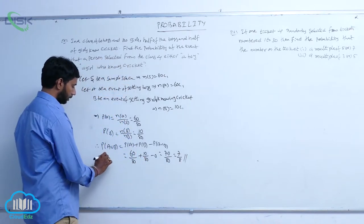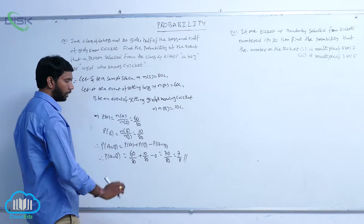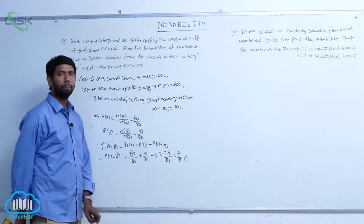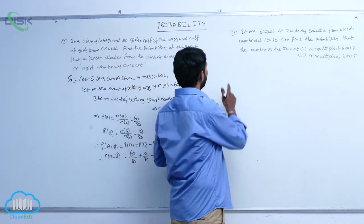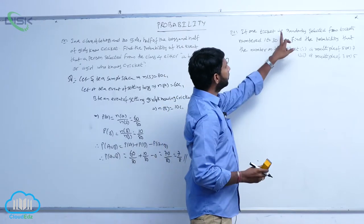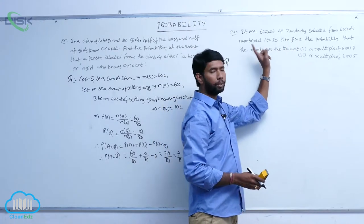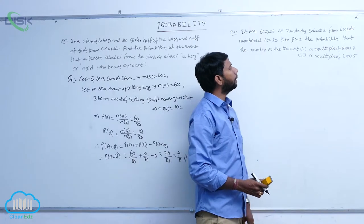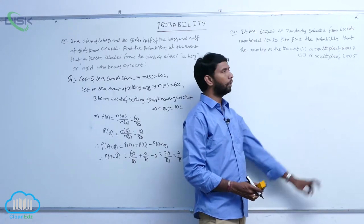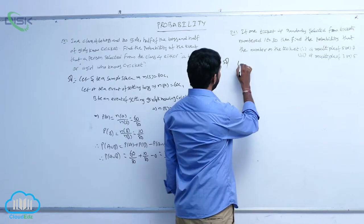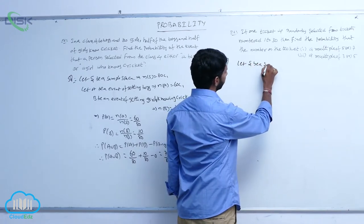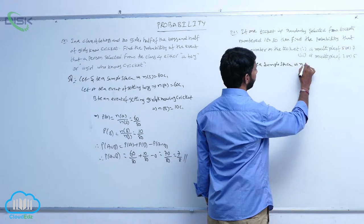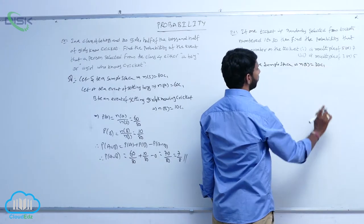Therefore the probability of selecting either a boy or a girl who knows cricket is 7 by 8. Next example: if one ticket is randomly selected from ticket numbers 1 to 30, then find the probability that the number on the ticket is a multiple of 5 or 7, or a multiple of 3 or 4. Let S be a sample space. One ticket is selected from 30 in 30 C1 ways, so N of S is equal to 30 C1.